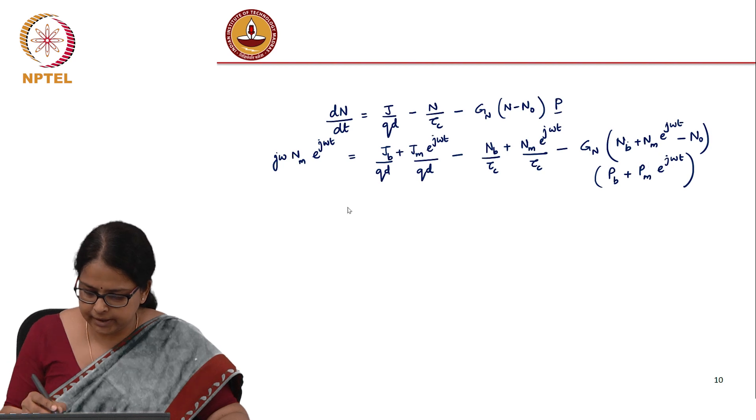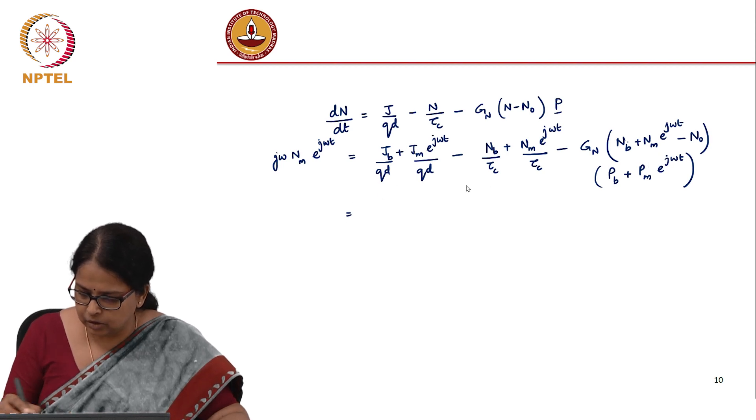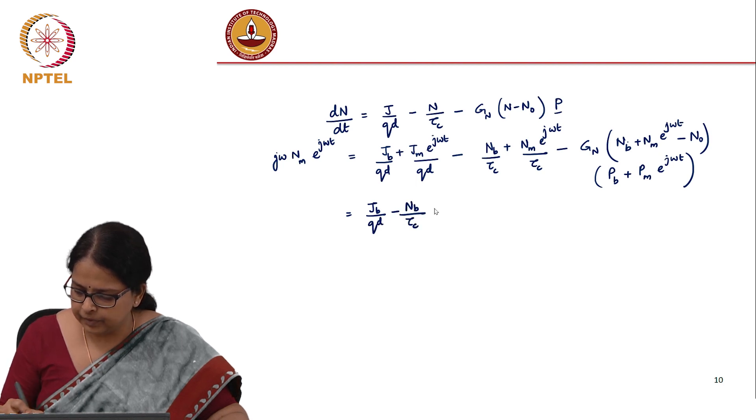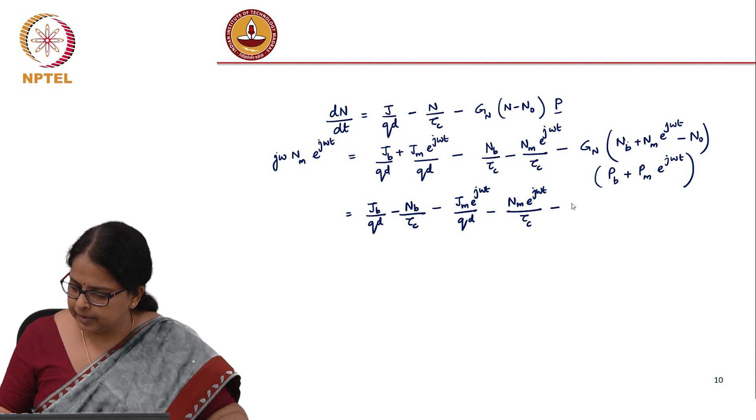Let us do this product and accumulate the DC terms minus n_b/tau_c minus j_m*e^(j*omega*t)/(qd) plus... there has to be a minus n_m*e^(j*omega*t)/tau_c.